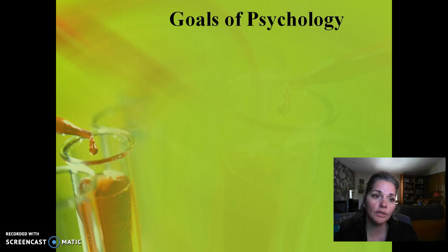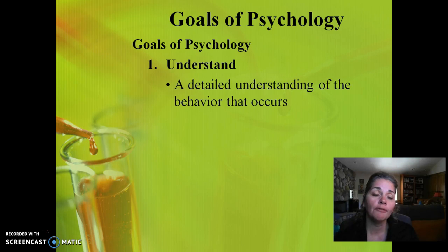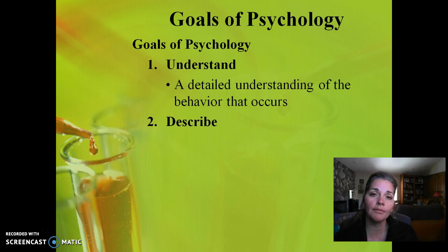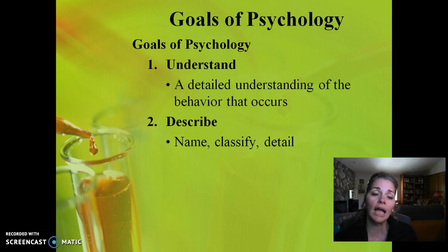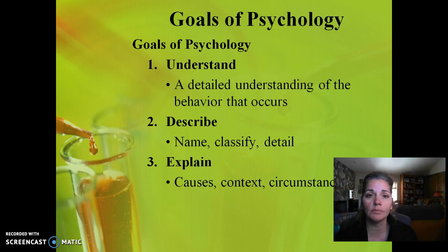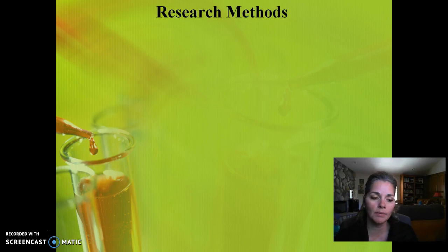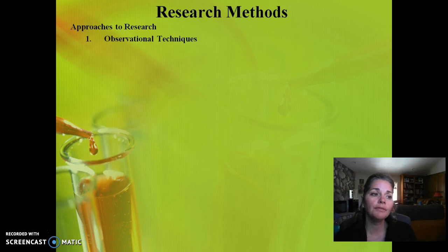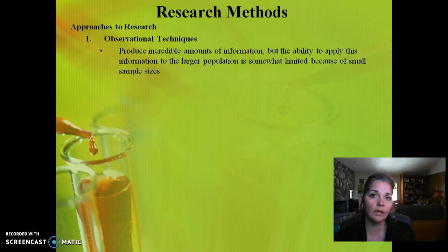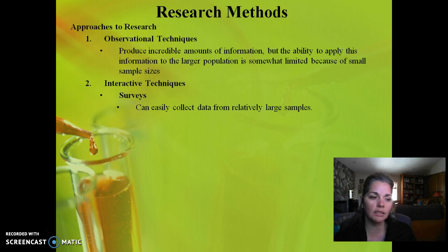Different approaches to research. We do have different goals in psychology. First, we want to try to understand behavior, and that requires a detailed understanding of the behavior that occurs. We want to describe the behavior — naming it, classifying it, providing details — and explain the behavior in terms of its causes, what's contributing to it, and the context under what circumstances the behavior might occur.